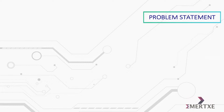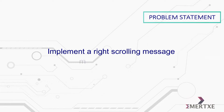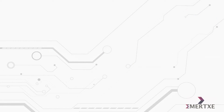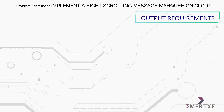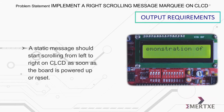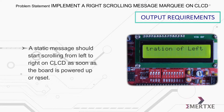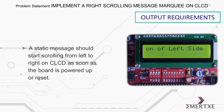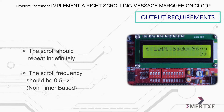In this assignment, you have to implement a right-scrolling message on CLCD. Basically, a static message should start scrolling from left to right on the CLCD as soon as the board is powered up or reset.